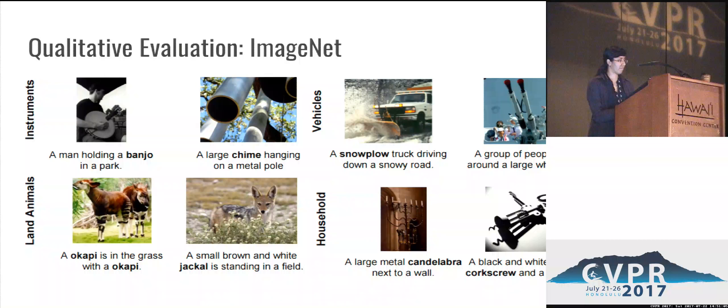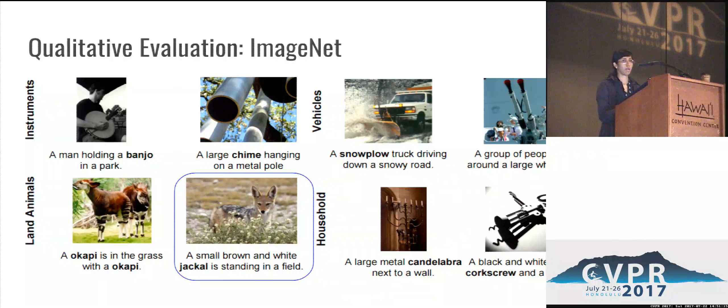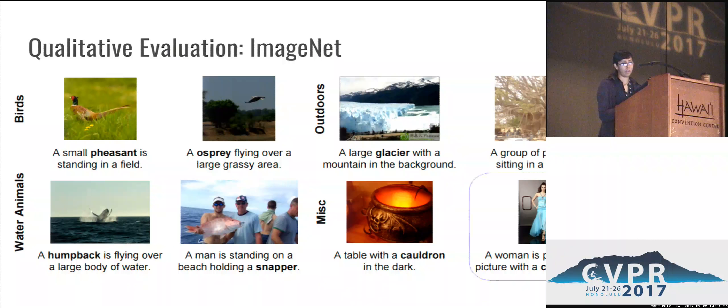Here are several examples from different categories of objects that our model is able to caption. For the example of a jackal, it says: a small brown and white jackal is standing in a field. In all of these examples, the model is able to generate captions about these objects in context. In another example, the model generates: a woman is posing for a picture with a chiffon dress — using the word chiffon as an adjective in the description.